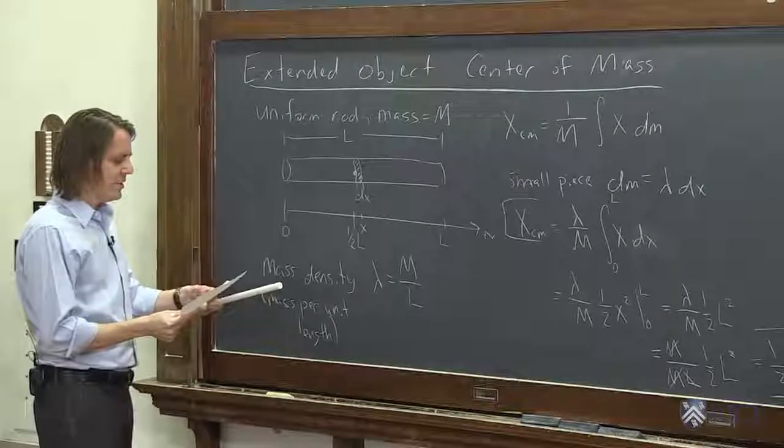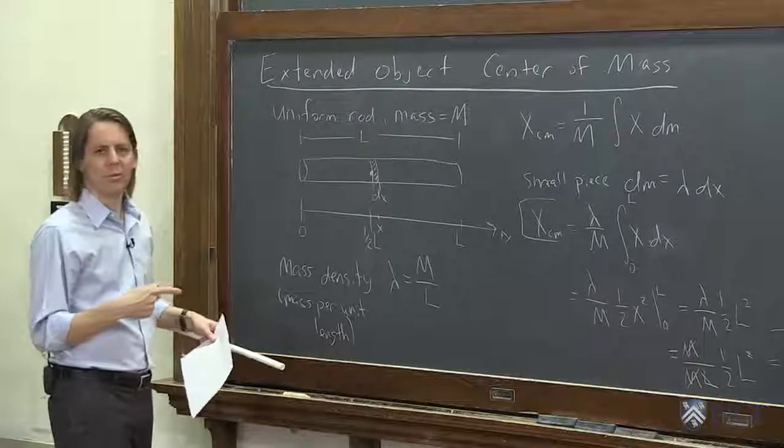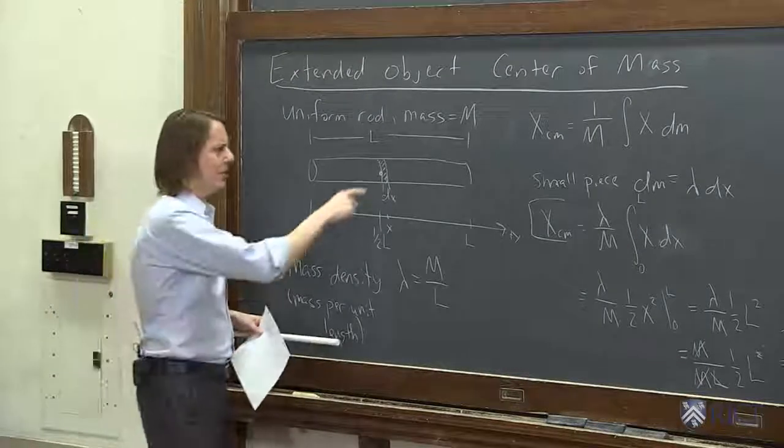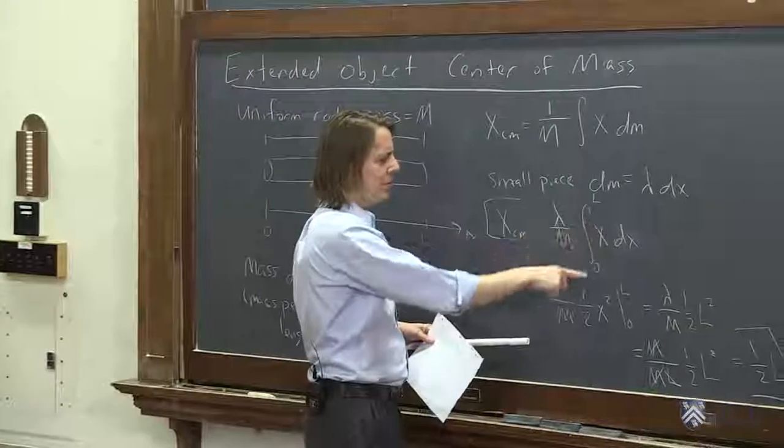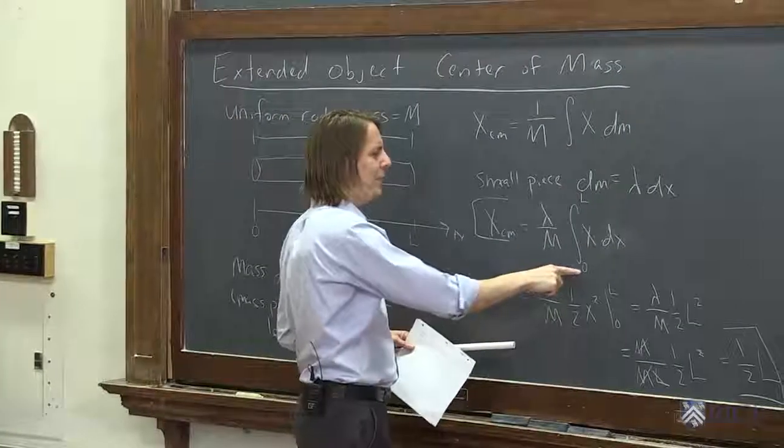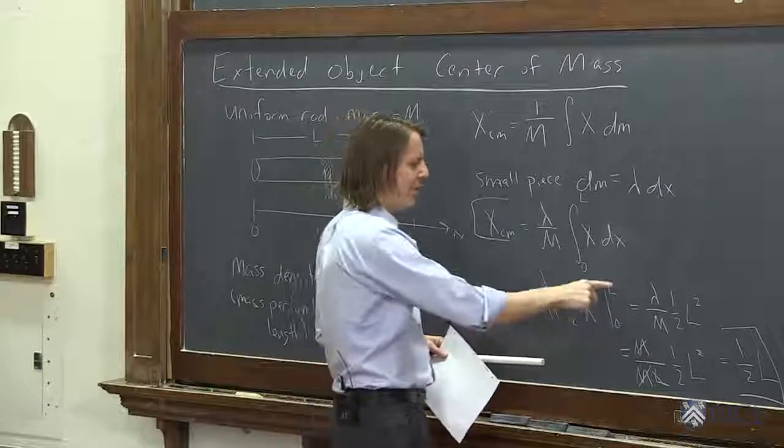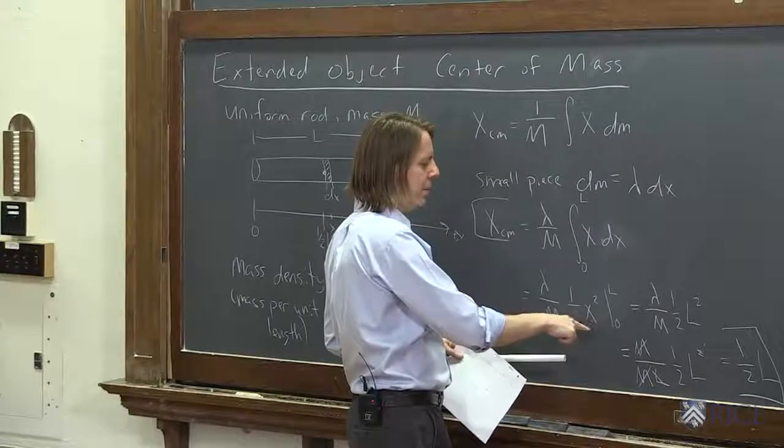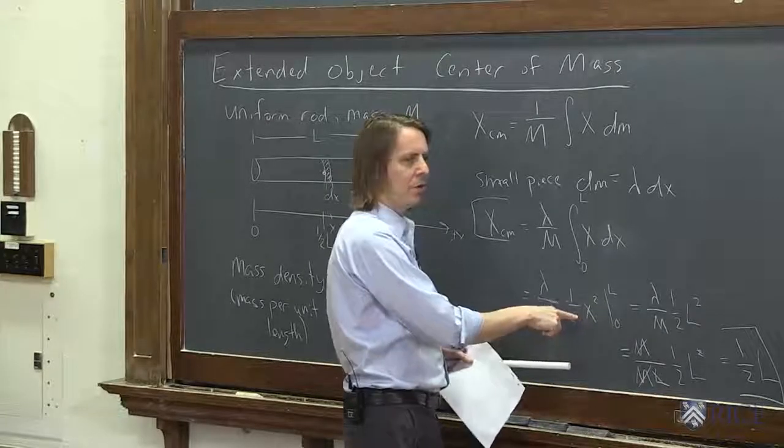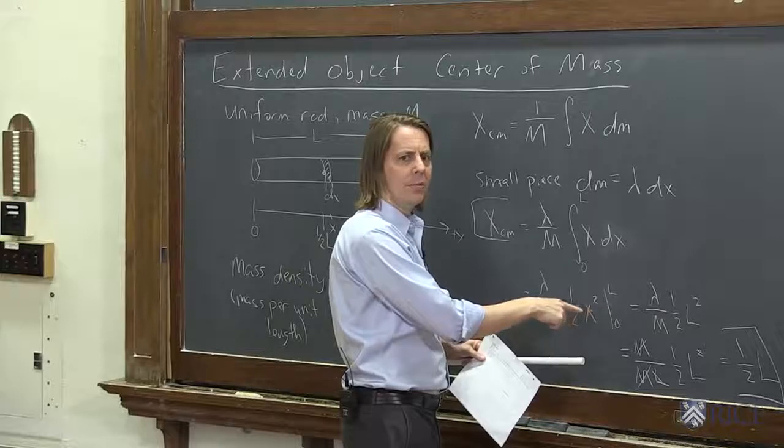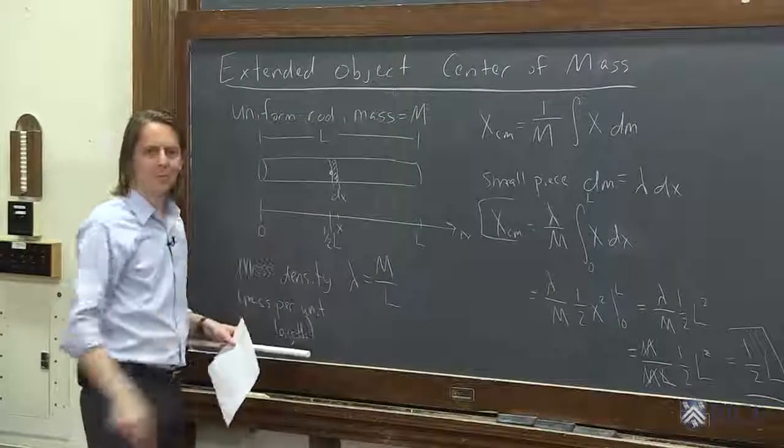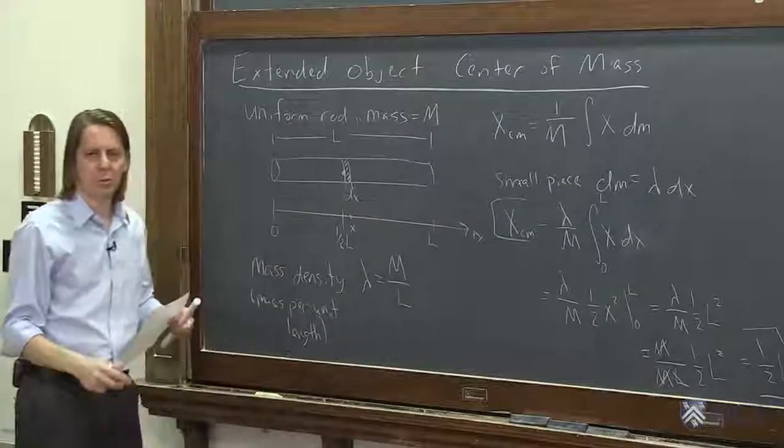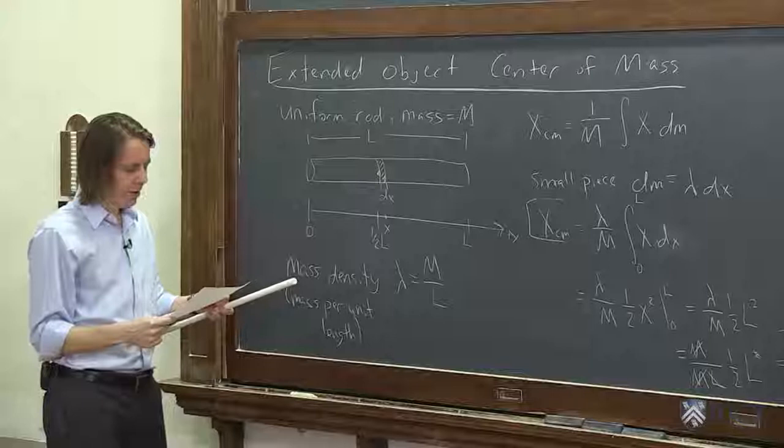Also, keep in mind that it doesn't depend on the coordinate system you set up. What if we had said, let's put the origin in the middle? Then we would have said, if the origin in the middle, that would have only changed the limits of the integration. It would have been from minus L over 2 to L over 2. And we evaluated that. We would have plugged in L over 2 would be L squared over 4 minus L over 2 squared is L squared over 4. We would have gotten 0. Well, it can't be 0. Oh, well, yeah, it can be because we put the origin. X equals 0 was in the middle. So we could put the origin anywhere, and we'd always find that the center mass ends up in the middle of the rod. It does not depend on the coordinate system.